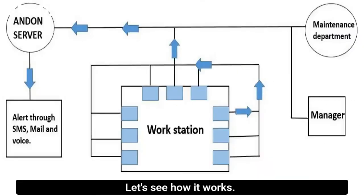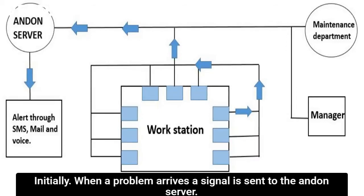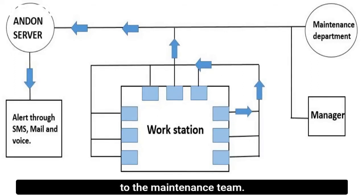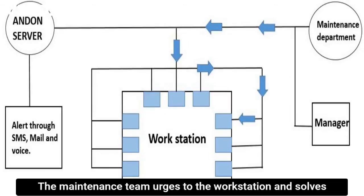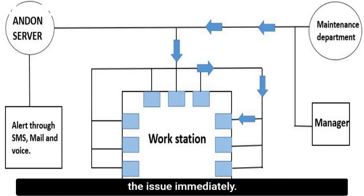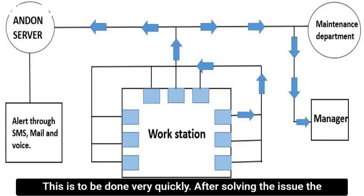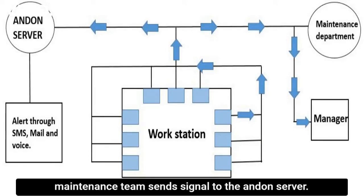Let's see how it works. Initially, when a problem arrives, a signal is sent to the Andon server. The server then sends a notification alert about the issue to the maintenance team. The maintenance team goes to the workstation and solves the issue immediately. This is to be done very quickly. After solving the issue, the maintenance team sends a signal to the Andon server.